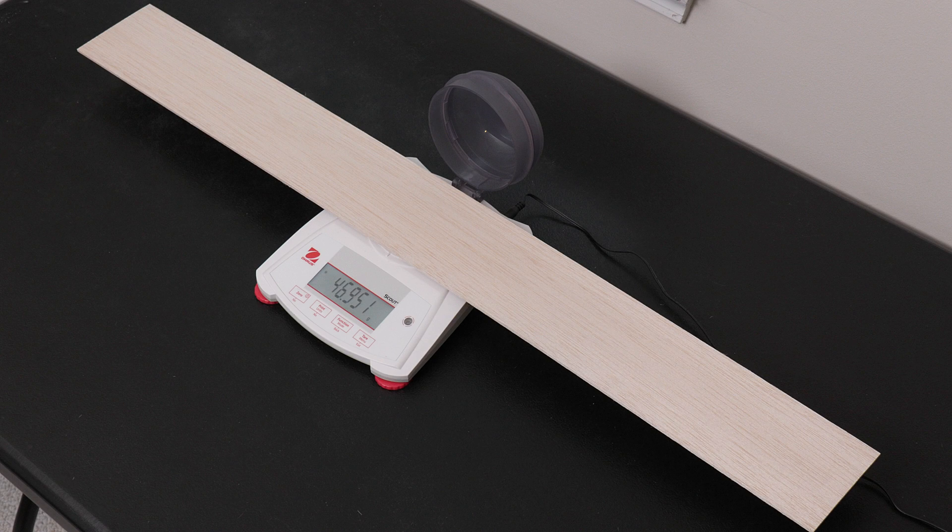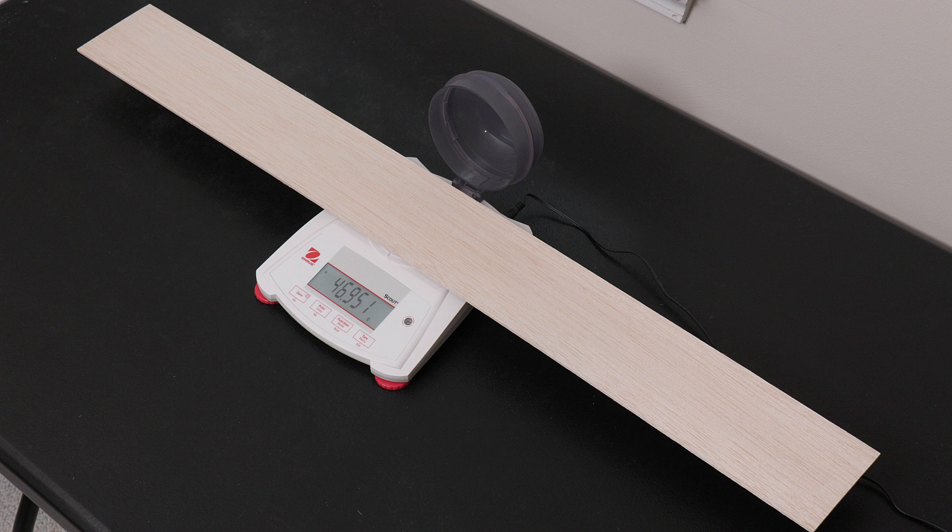This sheet is 46.95 grams and on average should get us very close to our target of 1.15 grams per leg. I'll cut up the entire sheet into 40 equal pieces and see what kind of distribution we get.